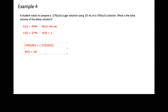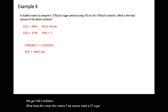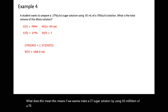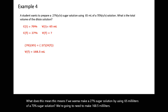We get 168.5 milliliters. This means if we want to make a 27% sugar solution using 65 milliliters of a 70% sugar solution, we need to make 168.5 milliliters of this solution total.